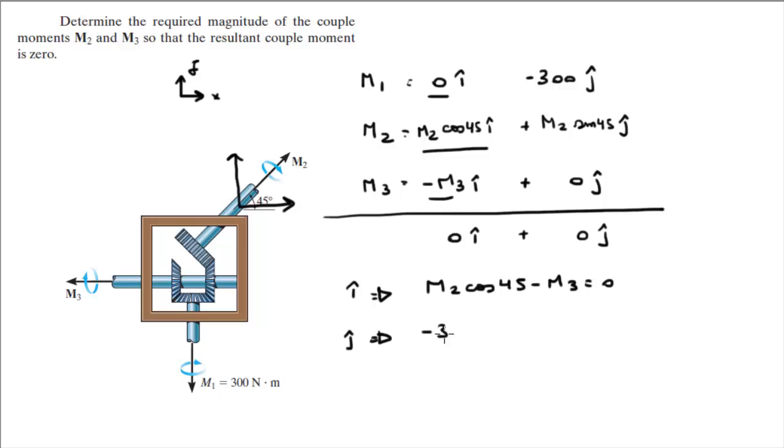And for the other one is minus 300 plus M2 sine of 45 is equal to 0. And there's only one variable in the second one, so you can solve for M2 right away.